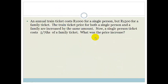An annual train ticket costs 1,000 rand for a single person, but only 1,500 rand for a whole family ticket. The ticket price for both are increased by the same amount, but now a single person ticket costs five-sevenths of a family ticket. What was the price increase?